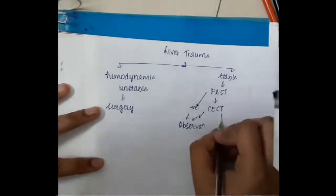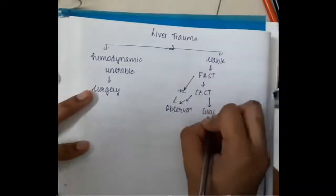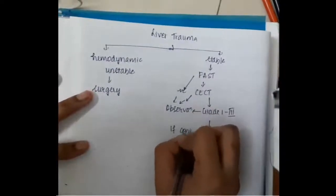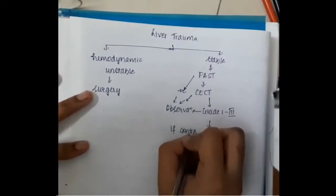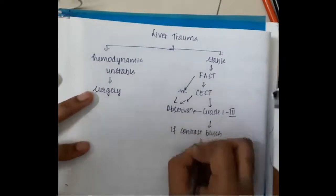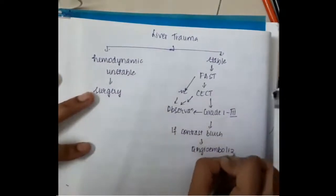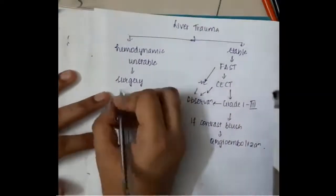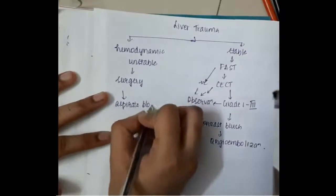If FAST is positive, we should do CECT. If FAST is negative, we will do observation. On CECT, if the injury is Grade 1, 2, or 3, you can observe the patient safely. However, if along with Grade 1, 2, or 3 there is any contrast blush, then you have to do angio-embolization.